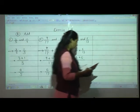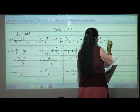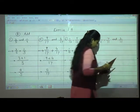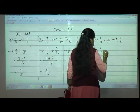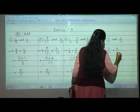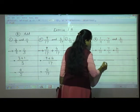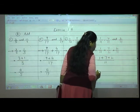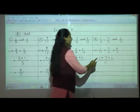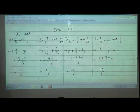Last example — the eighth one: 1 upon 11, 7 upon 11, and 2 upon 11. Write the numbers and give the addition symbol between three fractions. Write denominator only once and add all numerators: 1 plus 7 plus 2. 1 plus 7 is 8, 8 plus 2 is 10 upon 11. Very easy!